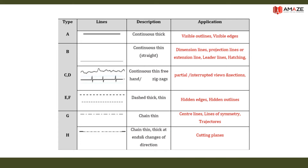Chain thin lines are used for center lines, lines of symmetry, and trajectories. Chain thin lines with thick edges are used where the line can also change direction — that is, for cutting planes or section planes.